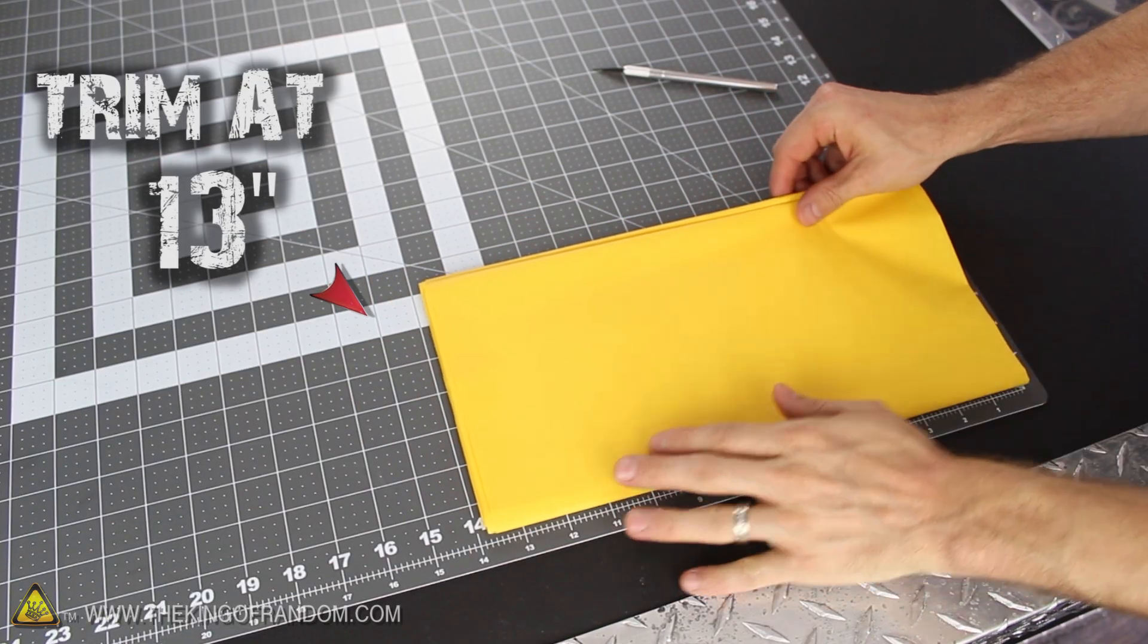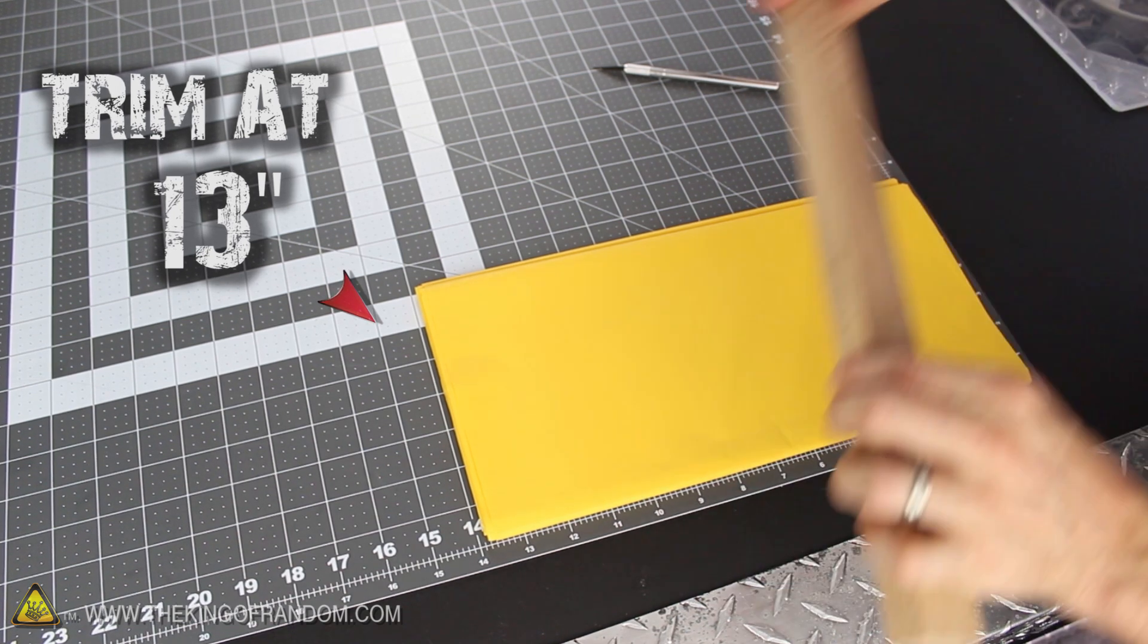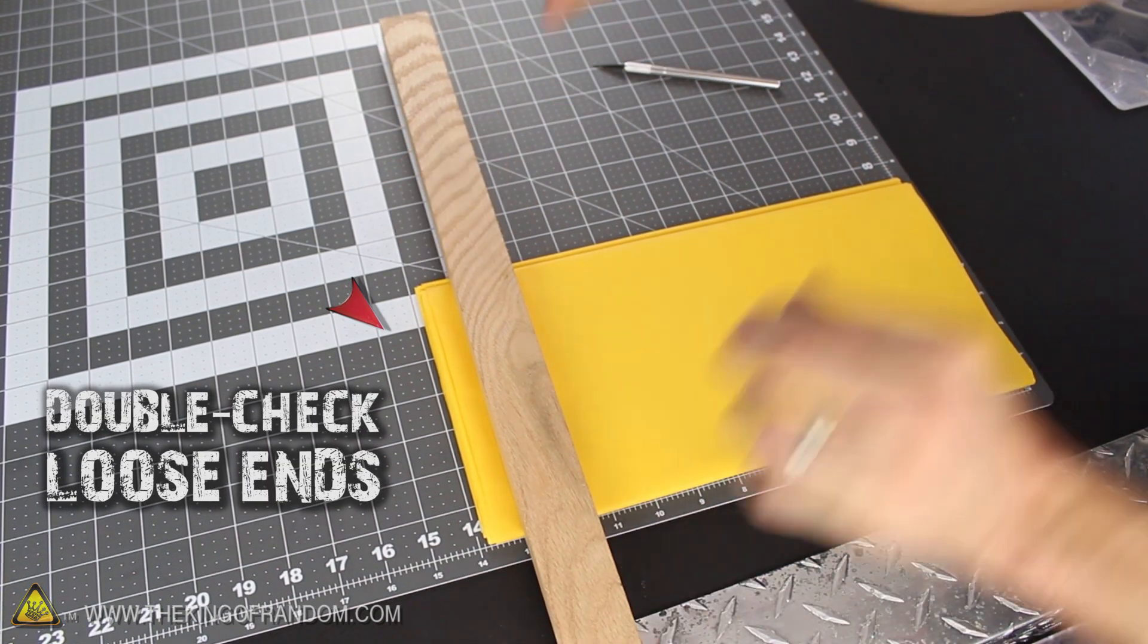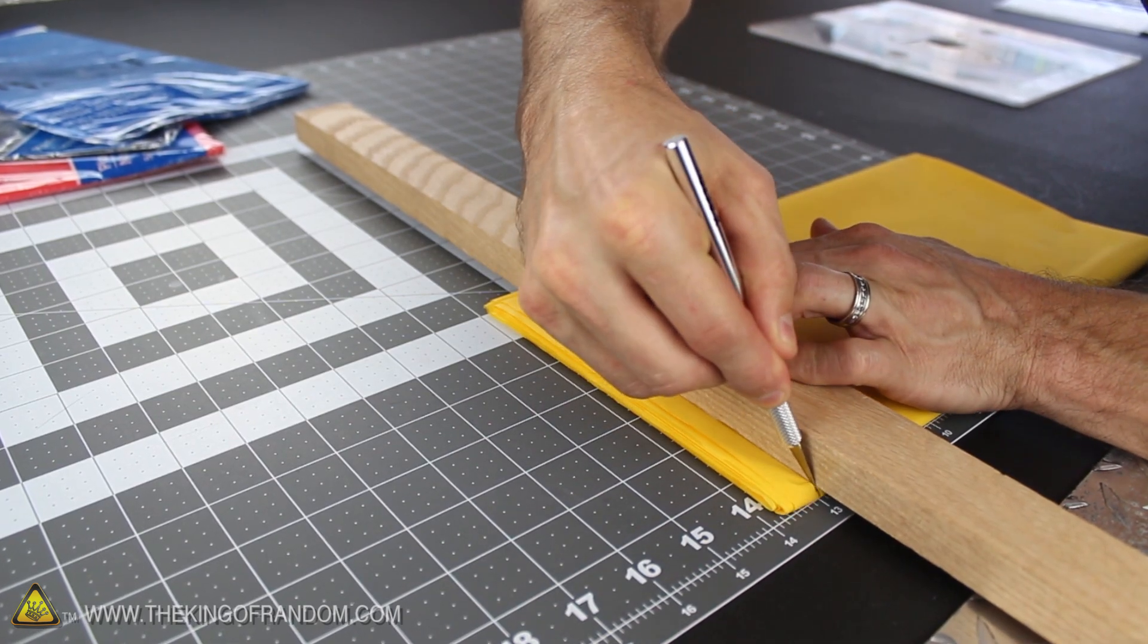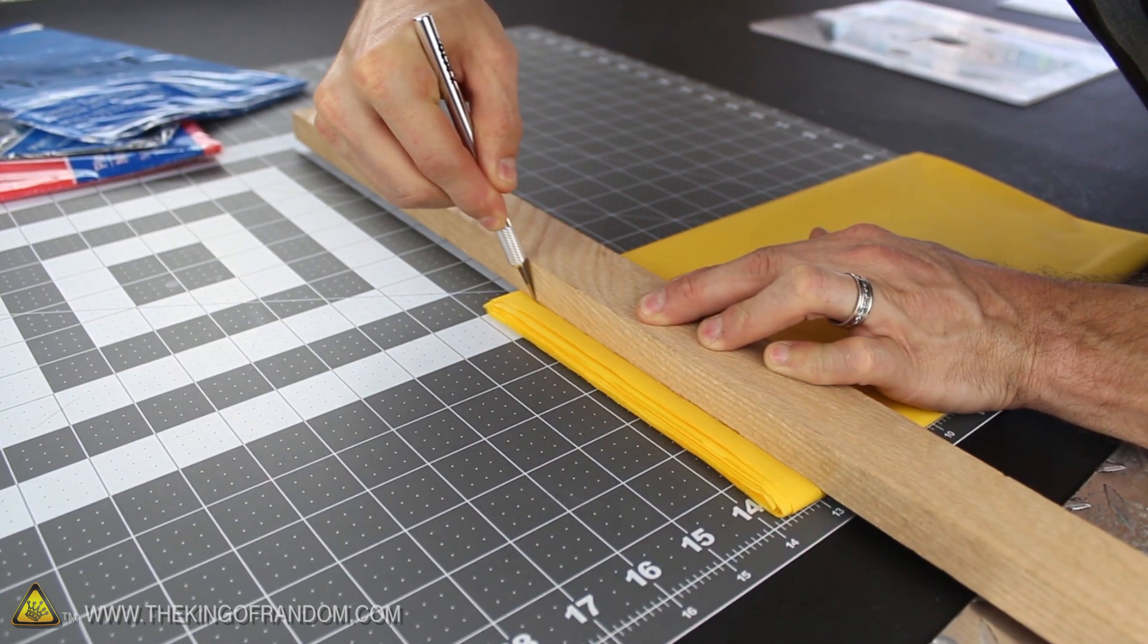Now this needs to be trimmed down just a little, so measure 13 inches from the smooth end of the bundle and double check that the side you're about to cut is the one with all the loose ends. I'm using an exacto knife and a straight edge to try and get a clean cut, but you could use a pair of scissors just as well.